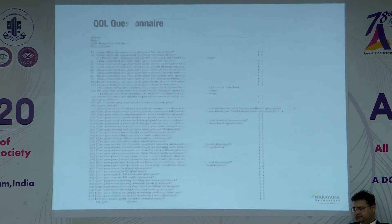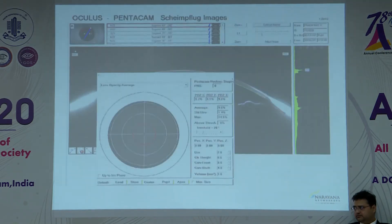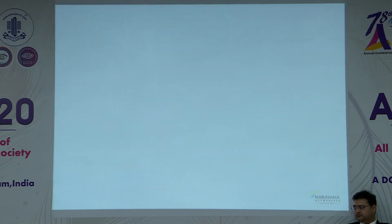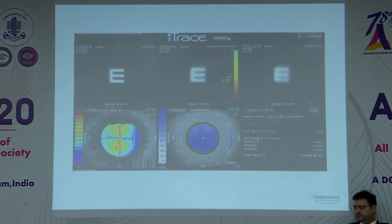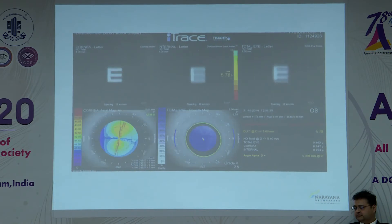We also administered quality-of-life questionnaires to patients. On the Pentacam, we see a 0-1-2 grading of the cataract. Similarly, on the eye trace, from a scale of 1 to 10, we get the dysfunctional lens index. In this particular case, it is 5.78.